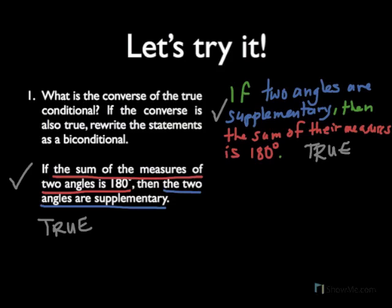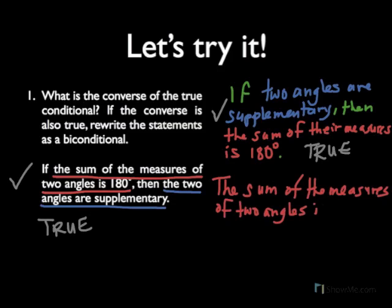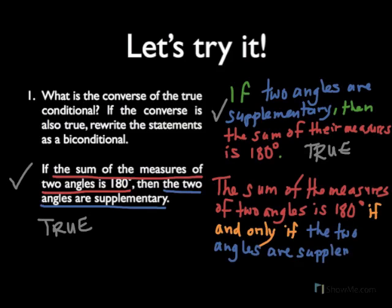And we do that by joining the hypothesis and conclusion using the words if and only if. So our biconditional should read, The sum of the measures of two angles is 180 degrees if and only if the two angles are supplementary.